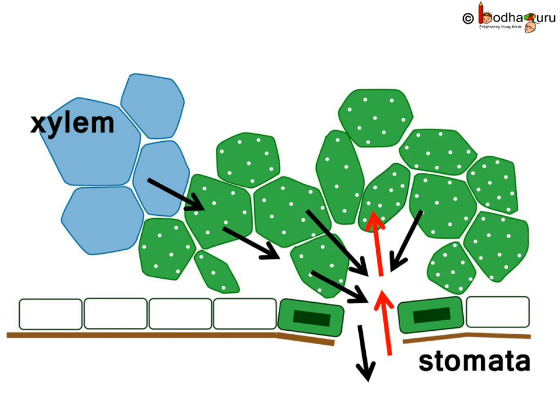The gaseous exchange in the cell works by diffusion. When the cell is low in oxygen, the oxygen concentration is higher outside the cell, so oxygen diffuses into the cell. When the oxygen level is high in the cell because of photosynthesis and oxygen concentration is lower in the surroundings, the oxygen gas diffuses out of the cell.